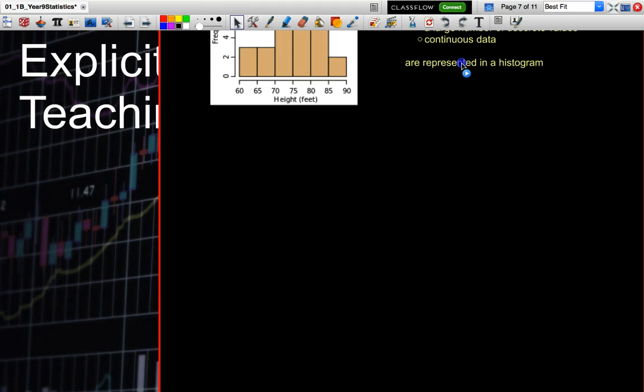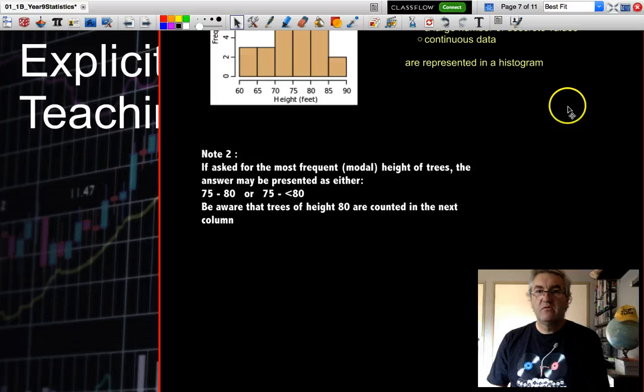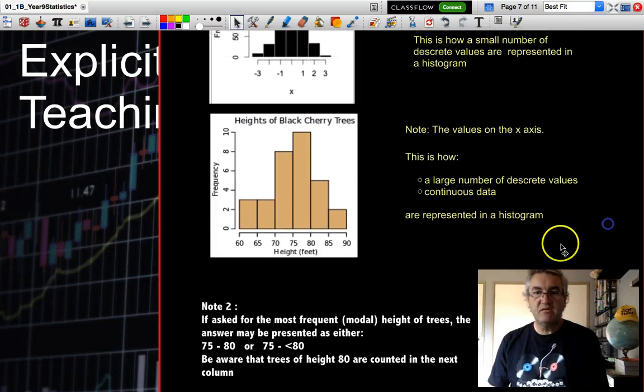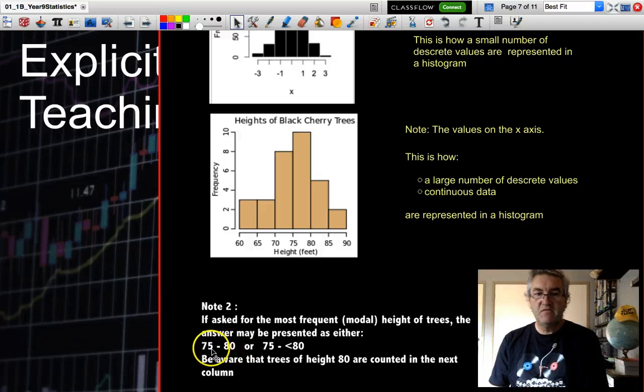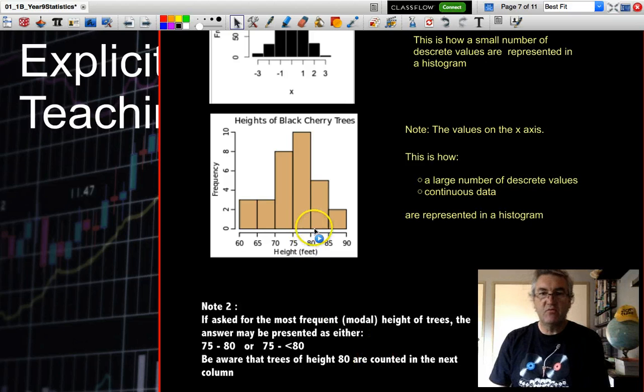And the last bit of information. Now, if we're asked for the most frequent or the modal height of the trees, the answer may be presented in either one of these two formats: 75 dash 80 or 75 to 80 or 75 to less than 80. And as I've already mentioned, you have to be aware that the height of the 80 is counted in the next column. In other words, trees that are 80 or more would be counted in this column here.